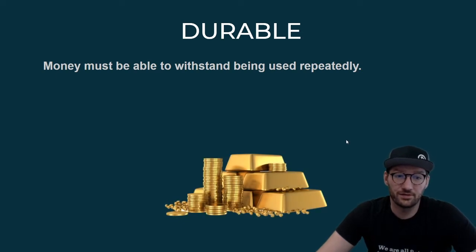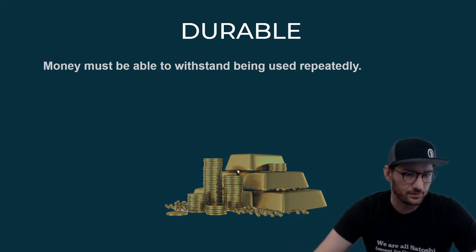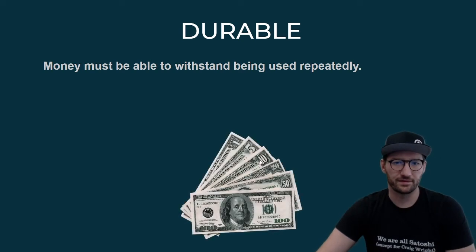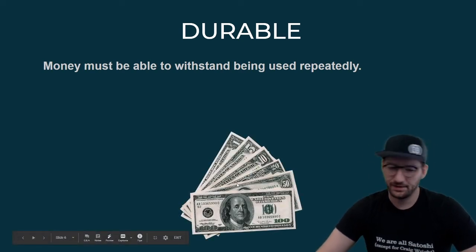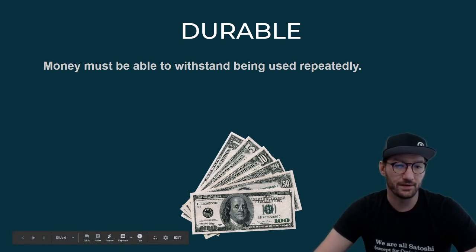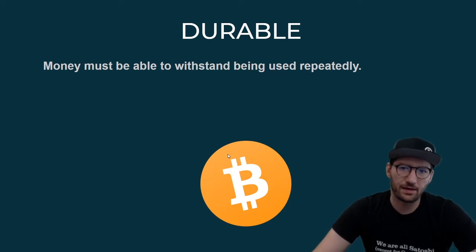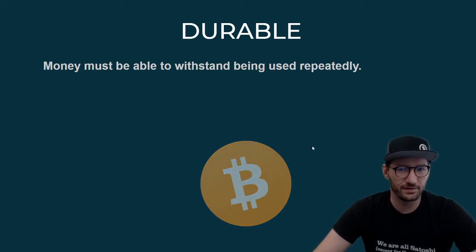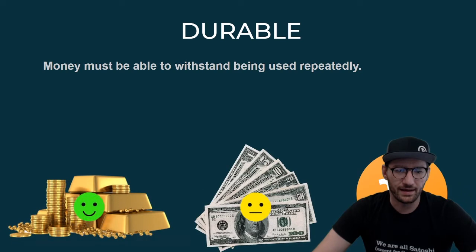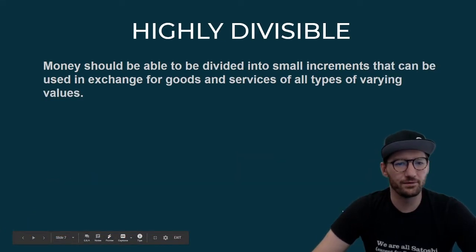Being durable — we need to make sure that money can be used over and over. Gold, very very durable, it's been used for thousands of years. Cash, moderately pretty durable, but after a while it's paper so it can deteriorate after many, many use cases. Bitcoin can be used thousands and thousands of times and it's always going to be good to go. So I gave gold happy, cash the mid-grade, and then Bitcoin the happy face as well on that one.